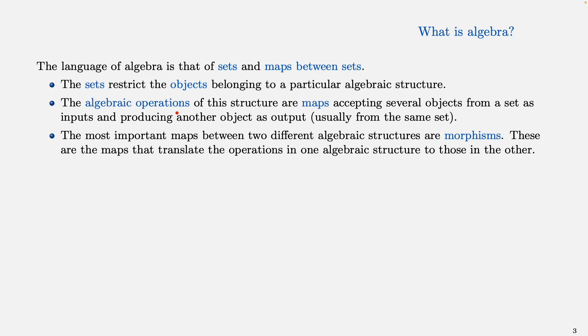The algebraic operations of our algebraic structures are maps that accept as input several objects from a set and produce another object as output, which most of the time is taken from the same set but not always.